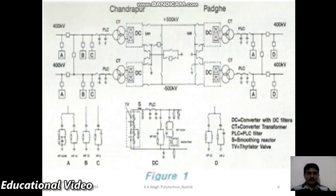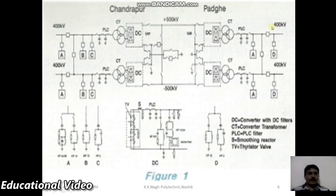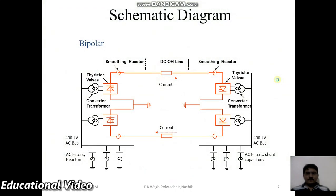This is the basic operation of the HVDC transmission system. This is the picture of the Chandrapur-Padge HVDC transmission line. At the sending end side we have a 400 kV AC supply, while the transmitting voltage is 500 kV DC. Again at the receiving end side, a 400 kV AC supply is present.